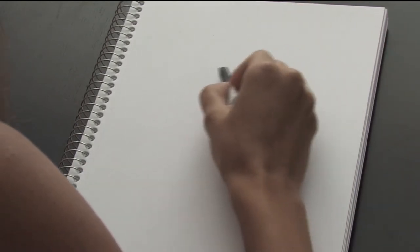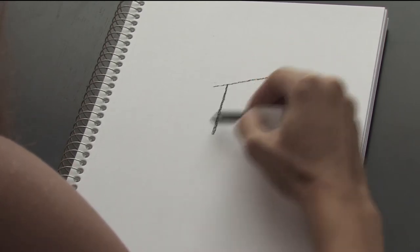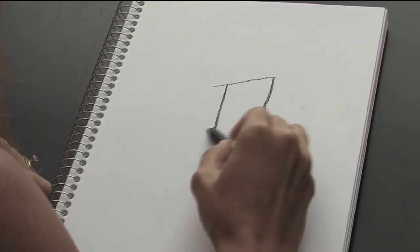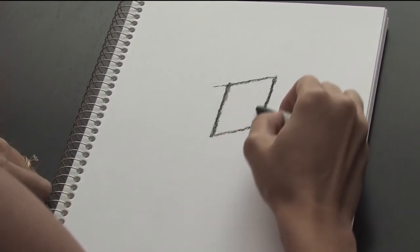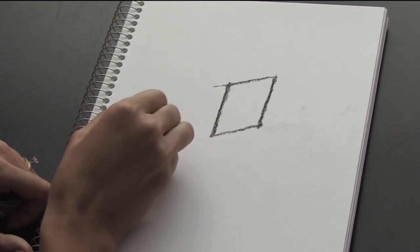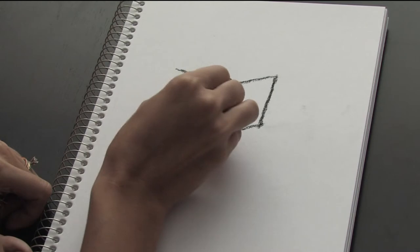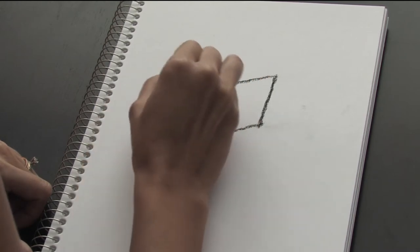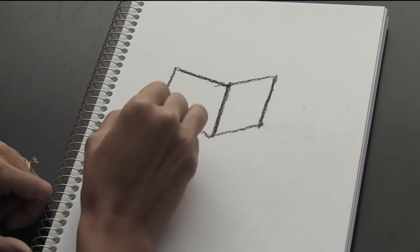So first we start with the parallelogram like this. This is the front side of our birdhouse. And one more parallelogram which is sharing the vertical line with our previous parallelogram.